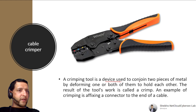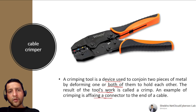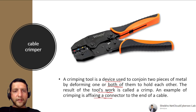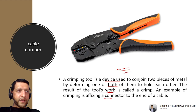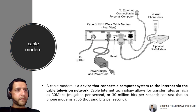A Cable Crimper is a tool used to conjoin two pieces of metal by deforming one or both to hold together. In networking, it is used to fix an RJ45 connector to the end of a cable — you cut the cable, insert the eight wires into the RJ45 connector, and use the crimper to secure it.